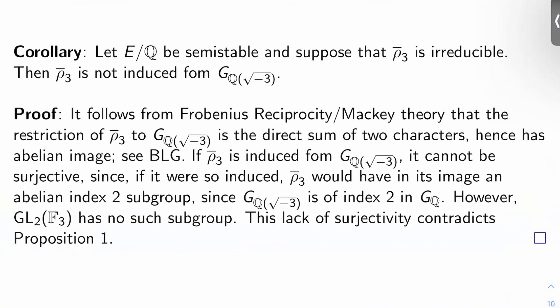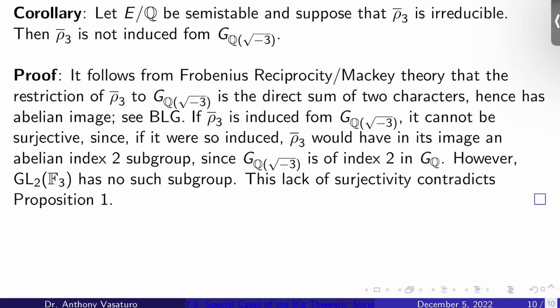So corollary, and then we'll end the video. Let's suppose E over Q is a semi-stable elliptic curve, and let's suppose that rho bar 3 is irreducible. Then rho bar 3 is not induced from a representation of G sub Q adjoin root negative 3, which is the Galois group of Q bar over Q adjoin root negative 3. So rho bar 3 doesn't come from some smaller representation on this smaller Galois group here. We will need this fact later. The proof is easy now, if you know Mackey theory. By Mackey theory, the restriction of rho bar 3 to G sub Q adjoin root negative 3 is the direct sum of two characters. The point is it has an abelian image.